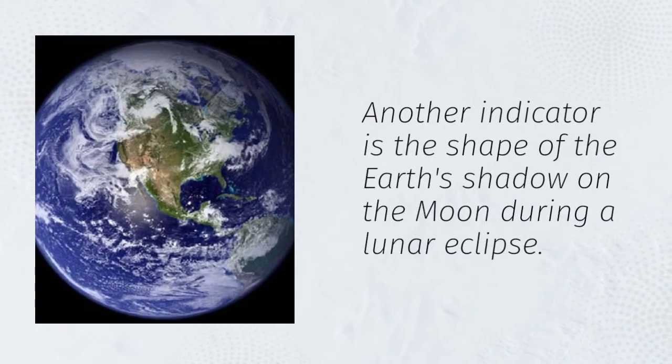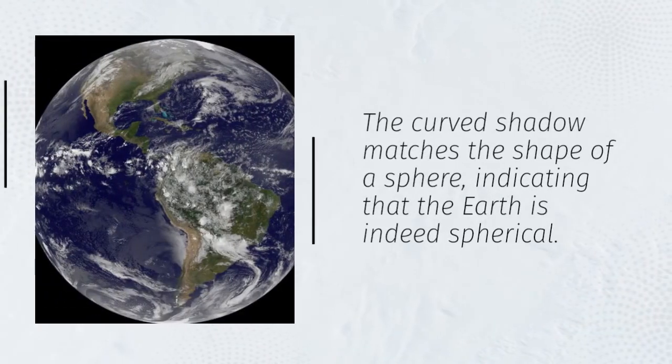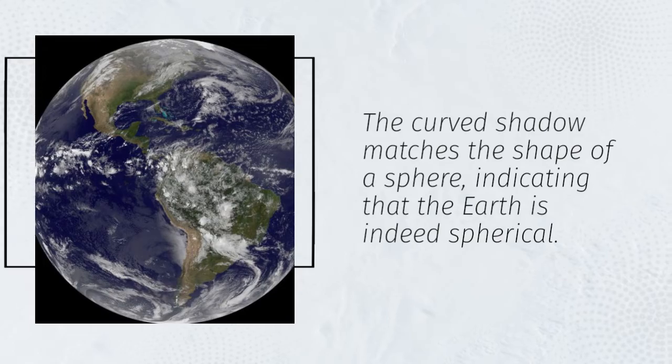Another indicator is the shape of the Earth's shadow on the moon during a lunar eclipse. The curved shadow matches the shape of a sphere, indicating that the Earth is indeed spherical.